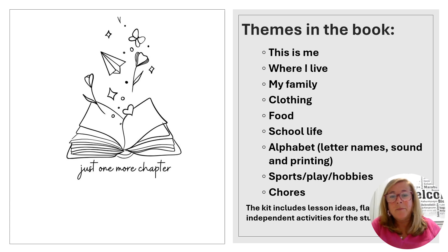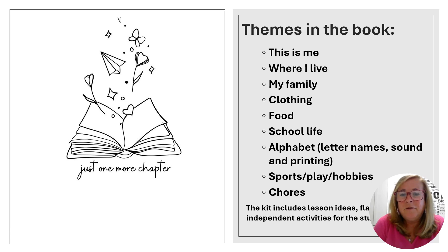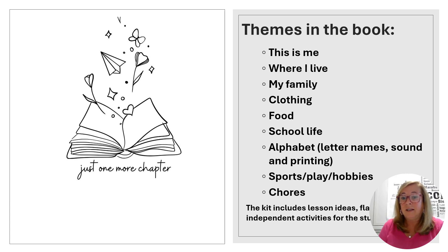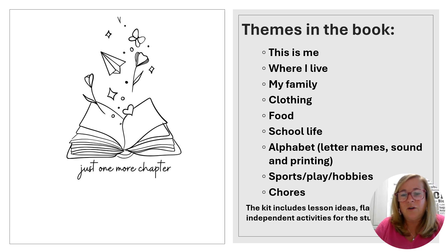This book, This is How We Do It, has many themes. Some of the themes included are: this is me, where they live, their family, clothing, food, school life, printing, alphabet sounds, sports, hobbies, and chores — things that they do at home. You could also explore things they do at school to compare and contrast. The kit we prepared back in the winter had lesson ideas and activities that were printed, and I will give you access to a link at the end of this presentation where you can print all of these things to use with the book.